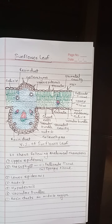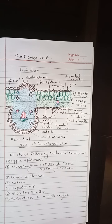Each vascular bundle remains surrounded by a layer of parenchyma cells, which helps in storing water and food. This is all about the anatomy of sunflower leaf, or internal structure of sunflower leaf, that is a dicot leaf. Thank you.